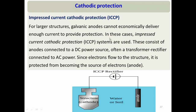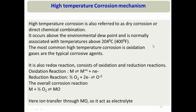For larger structures, the sacrificial anode method is insufficient as it cannot provide enough electrons for protection over large surfaces. In that case, we use impressed current cathodic protection — electrons are supplied from an external DC power source or transformer-rectifier connected to AC power. Since electrons are now provided externally, the iron surface no longer needs to oxidize to produce electrons, so it is protected.